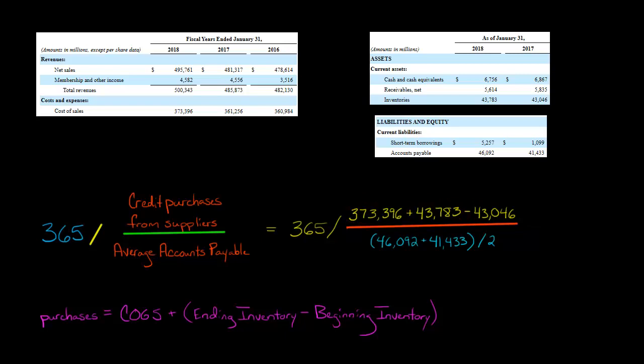And where do we get that from? Well, we're going to get that from the balance sheet. So our ending inventory, which is going to be added, that's $43.783 billion. So we've got cost of goods sold here, plus the ending inventory here, minus the beginning inventory. And the beginning inventory came from right here. As of January 31st, 2017, that's the beginning inventory.